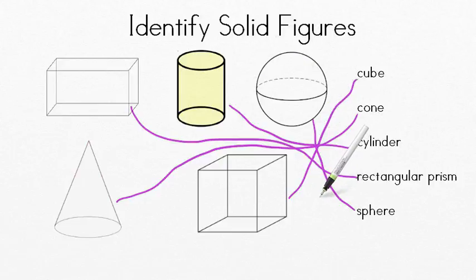Today we've been practicing identifying solid figures. You've been learning about the cube, the cone, the cylinder, the rectangular prism, and the sphere. Use these to identify solid figures in your home and throughout your math. Great job, and I'll talk to you more about math soon.